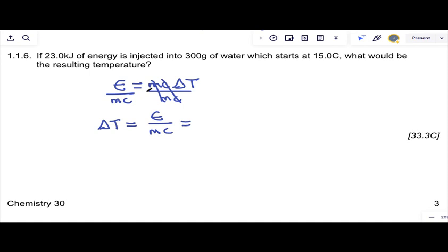Now in the other questions they were relatively nice about units. They either gave us all kilo units or all regular units, this time not so much. Our mass is in regular grams, our energy is in kilojoules. So I'm going to take this number, multiply it by a thousand and say my total energy is 23,000 joules. A kilojoule is a thousand joules. Mass is 300 grams, specific heat, 4.19 because we're talking about water, joules per gram degree Celsius. And if we crunch that 23,000 divided by 300, also divided by 4.19.